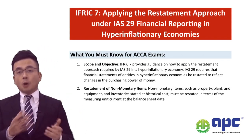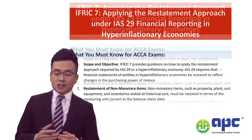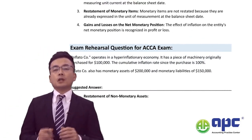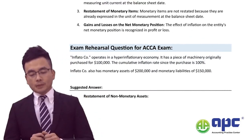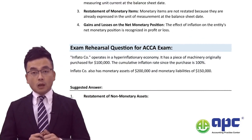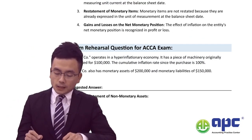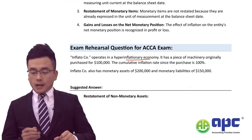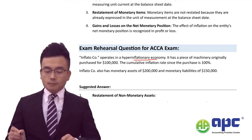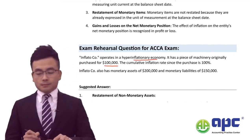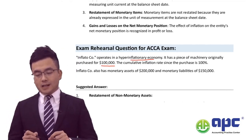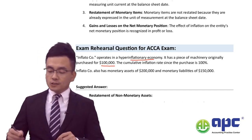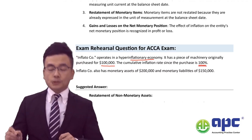This is important for the ACCA study. The best way I can show this is to take you through the example I drafted. The company operates in a hyperinflationary economy. It has PP&E purchased for $100,000, and at the year end, the cumulative inflation rate since purchase is 100%.